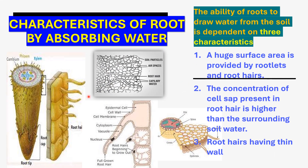Now, characteristics of roots for absorbing water. The ability of roots to draw water from the soil is dependent on three characteristics. First: a huge surface area is provided by rootlets and root hairs. You can see numerous root hairs present on a root, giving it a very large surface area. Second: the concentration of the cell sap in the root hair is higher than the surrounding soil water.